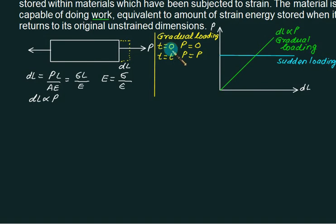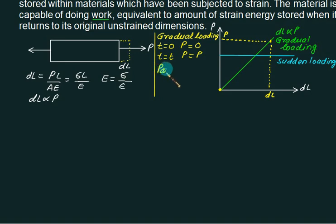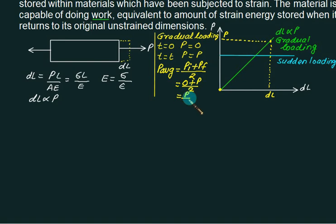In case of gradual loading, at T equal to 0 your force is 0, and at T equal to some value your force is P. The corresponding deformation is DL. So the average force applied is P_average equals initial force plus final force divided by 2 because it is linear. Therefore this value is (0 + P)/2, which equals P/2. On average, you apply a force equal to P/2 from start to end.